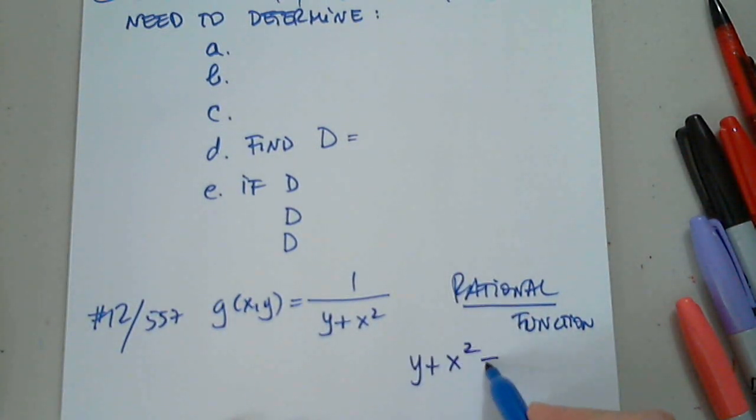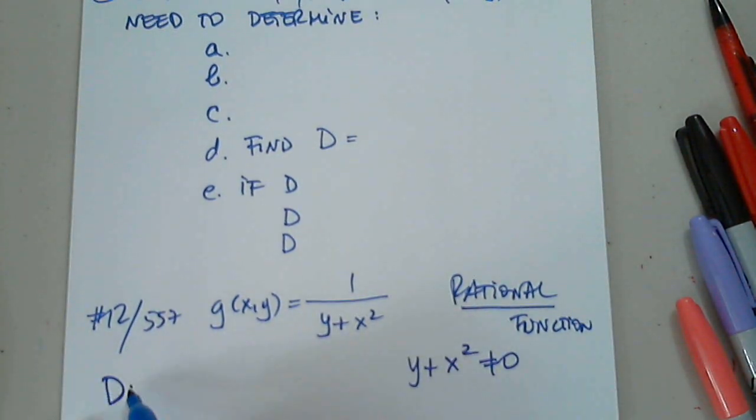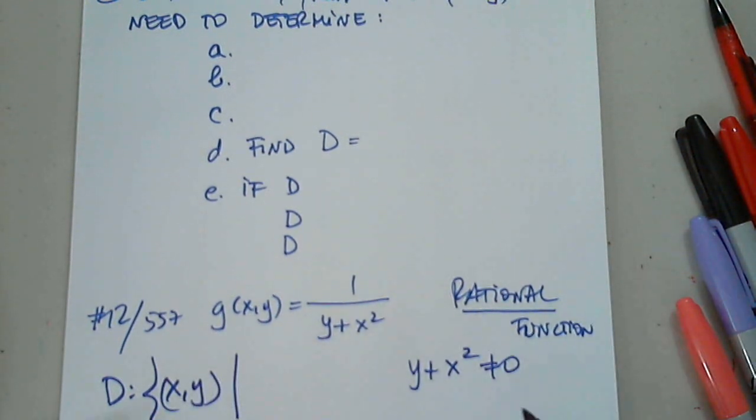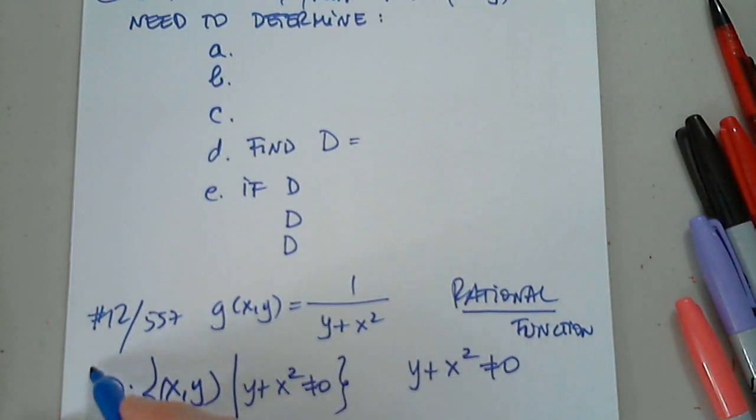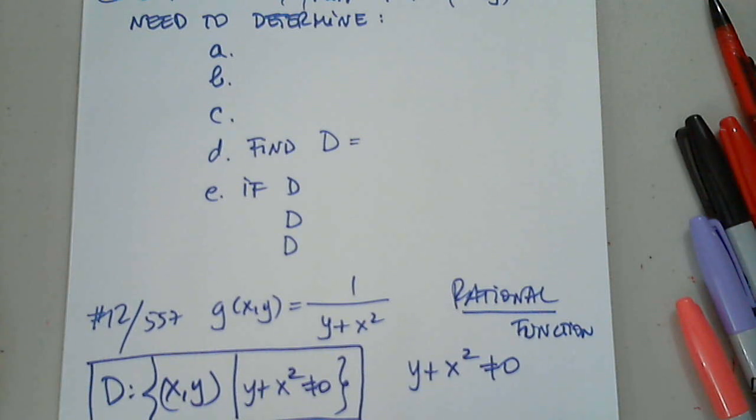So y plus x squared cannot be zero. So the domain consists of all the pairs having the property that y plus x squared is not zero. Is this okay?